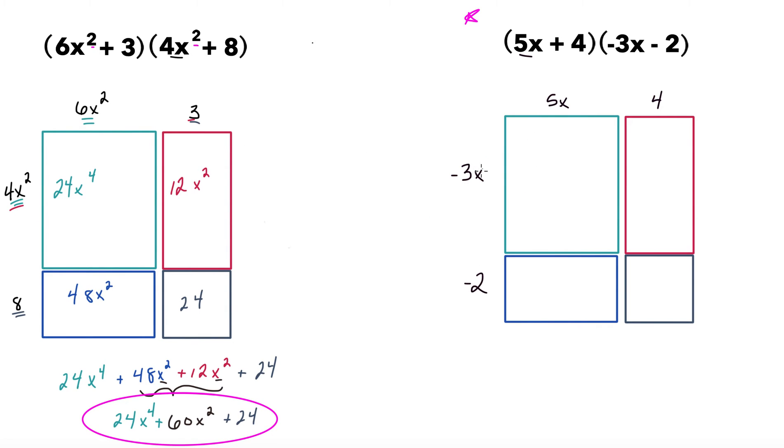Just like the last problem, we're going to find the area by multiplying side lengths. Negative 3x times 5x is negative 15, and since it's an x times an x, that would be x². Then we'll move on to negative 3x times 4. This would be negative 12x. Then negative 2 times 5x would be negative 10x. And then the final one, negative 2 times 4, which would give us negative 8.